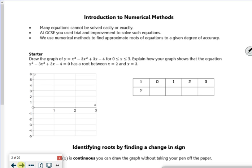So it says here many equations can be solved and we'd use trial and improvement, but that's a bit slow, there's better ways of doing it. It says draw the graph of y equals x cubed minus 3x squared plus 3x minus 4. I'm actually going to show you some on the calculator. Give me a second while I bring up the calculator.